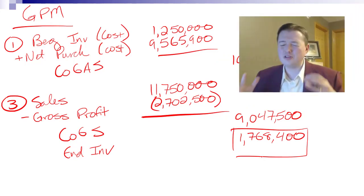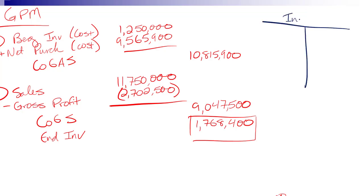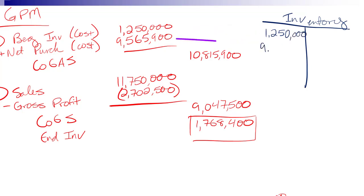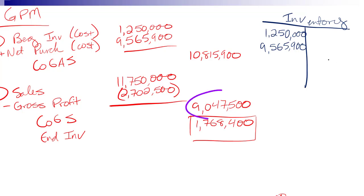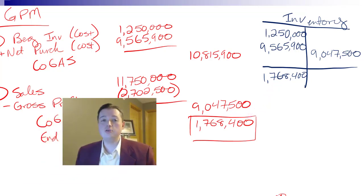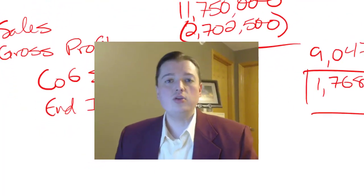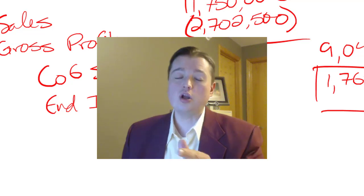Whichever method makes most sense to you — the table or the T-account — use it. This is a nice, easy method that goes right along with what we've done in the past to calculate the cost of goods sold section. It's a fast and easy way to figure out what's in ending inventory. The other method, which is more accurate but also more involved, is the retail inventory method — we'll talk about that when we come back.